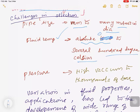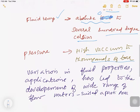Next is pressure, which varies from vacuum to thousands of bar. This variation in fluid properties and applications has led to the development of a wide range of flow meters, each suited for a particular area.